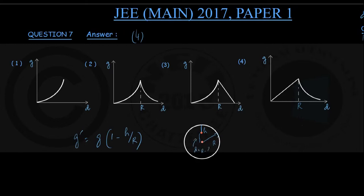This d is equal to r minus h, isn't it? At a depth of h below earth surface, distance from the earth center is r minus h. That is they are calling d.